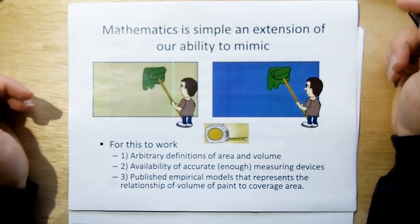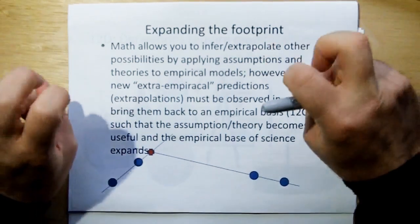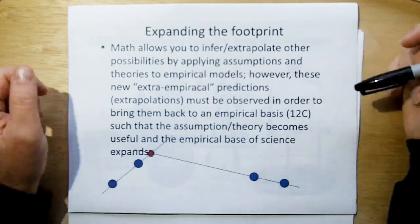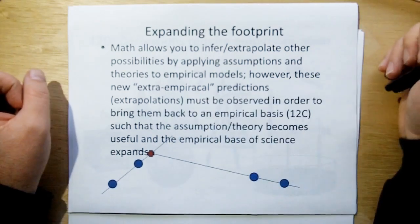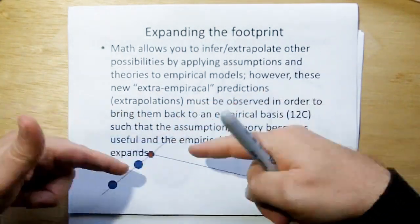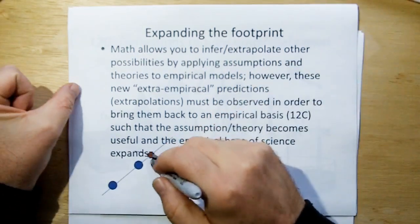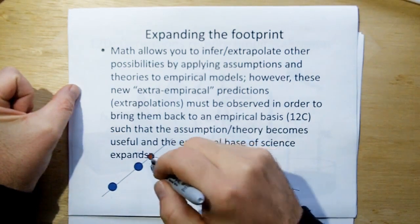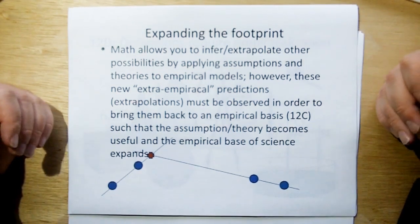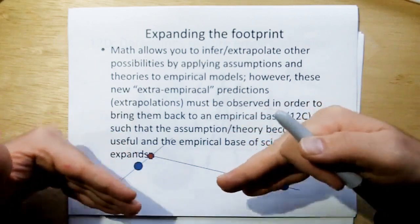Now, that's not always the case. Because math also allows you to infer and extrapolate other possibilities by applying assumptions and theories to existing empirical models. However, these new extra-empirical predictions must be observed in order to bring them back to an empirical basis. So therefore, even though we may use math and logic and reason to extrapolate beyond what empirical models we have to see where these things may line up to give us another point of interest in the universe, we still have to go there and measure it to verify that it's true. By measuring it, we bring this new information back down to an empirical basis. And therefore, science should always have empirical models. Always. Even though we may use math to extend and extrapolate, we must always bring it back to an empirical measurement.